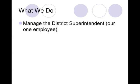What we do: the school board manages the district superintendent. The superintendent is the one employee of the school board. All other administrators, principals, and staff of the district report up through the superintendent. So it is not the school board's job to administer their work, but to administer the work of the superintendent.